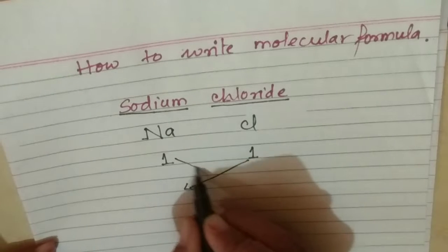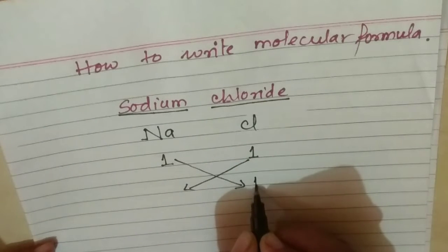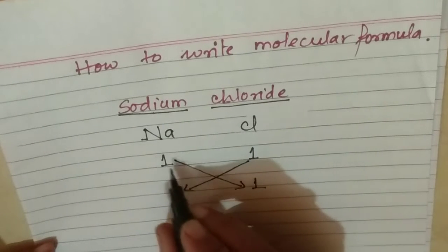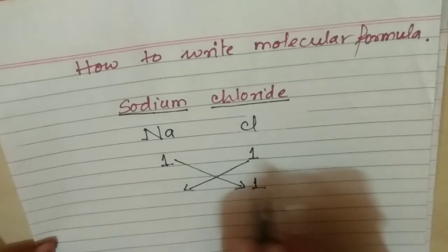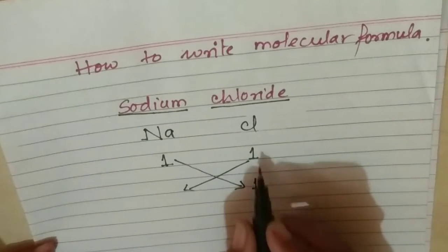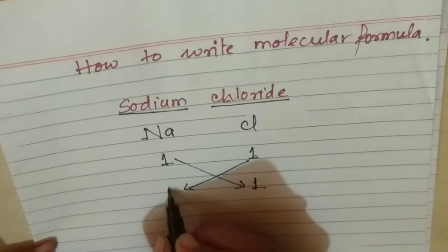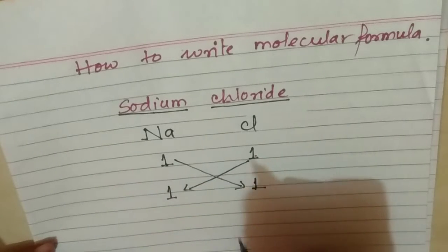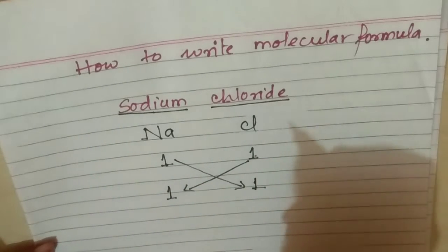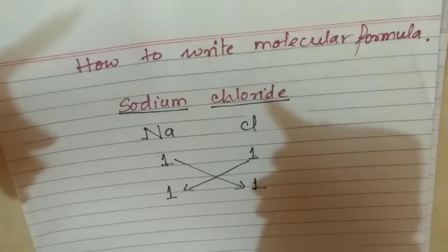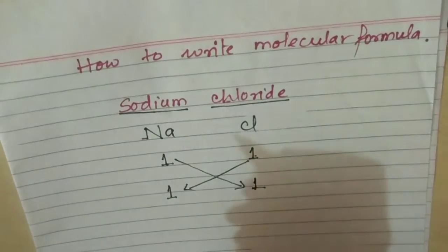This is the Criss Cross method. This valency we will write here and this one we will write here. This method is called the Criss Cross method.